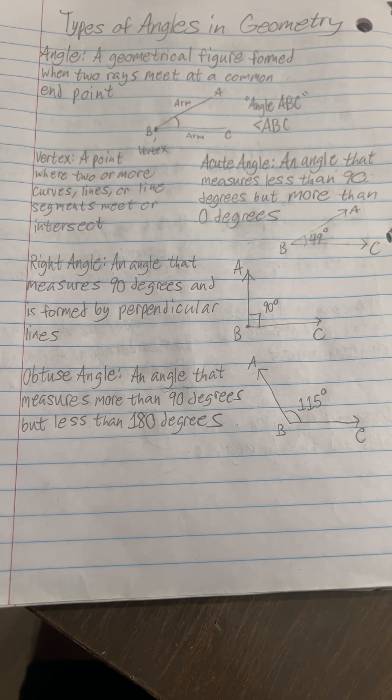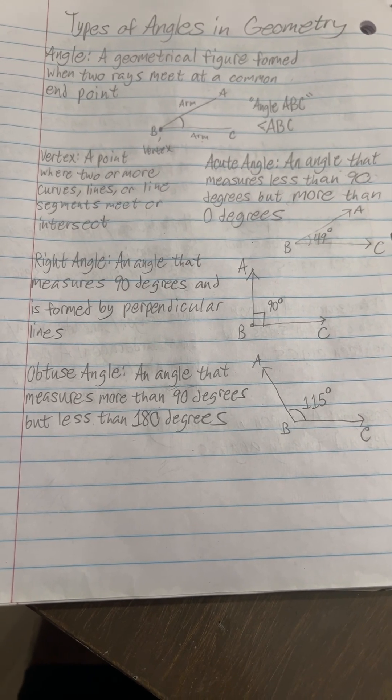An obtuse angle is an angle that measures more than 90 degrees but less than 180 degrees.